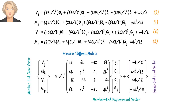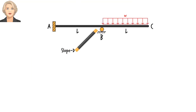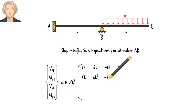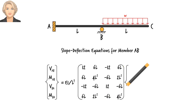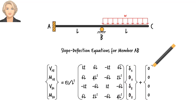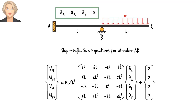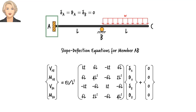Now let's apply this system of equations to each beam segment. For member AB, since the segment is not subjected to any loads, the fixed end load vector consists of zero elements only. We can further simplify the equations by setting delta_A, theta_A, and delta_B to zero — since A is fixed, displacement and rotation at that end are zero, and since there is a roller at B, there is no vertical displacement at that joint.